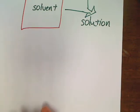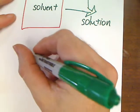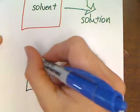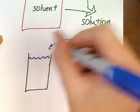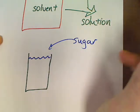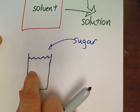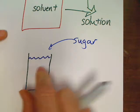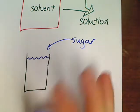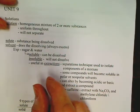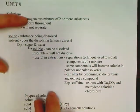For example, let's talk about sweet tea since we're in the South. Here's my tea, and somebody's going to put some sugar into it. The sugar is the solute, the water which the tea is made from is the solvent, and when you combine it all together it becomes a solution, which means it should be homogeneous — it should look the same all the way throughout.